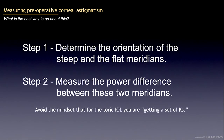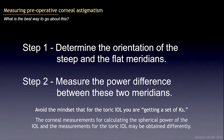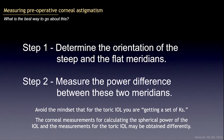So one of the first things to remember is to avoid the mindset that you're just getting a set of Ks. That's perfectly okay for calculating the spherical power of a toric lens, but not for determining the toricity that's used. Again, we're first looking to determine the orientation of the steep and the flat meridians.